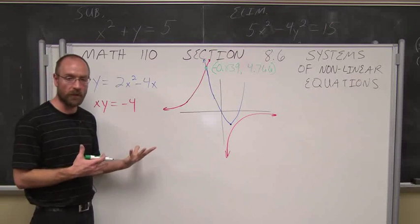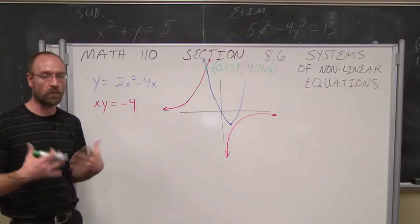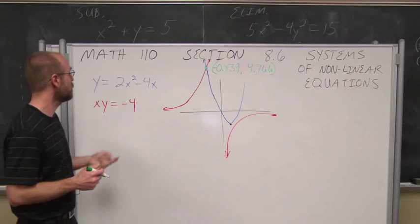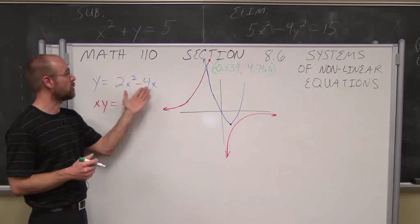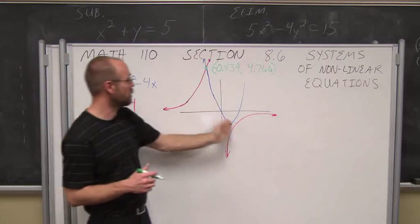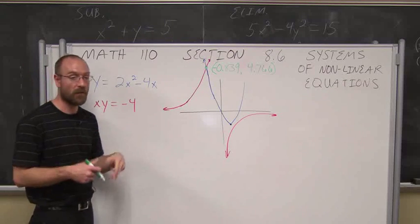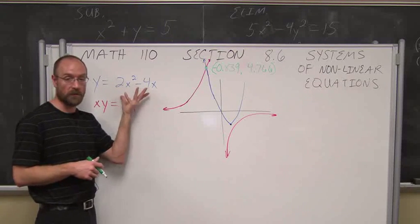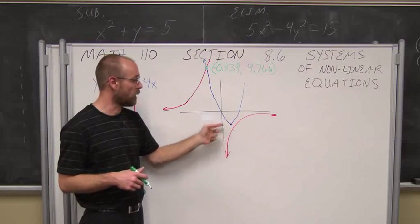So the first way to solve these, just like we did in linear equations, is we're going to look at graphing them. This is where we're going to use a graphing utility. The first equation we have is y equals 2x squared minus 4x. Hopefully, we recognize this to be a parabola. I put it in blue, so you could see this would be the parabola. If we didn't have a graphing utility, we could complete the square on this and find out that it has a vertex of positive 1, negative 2.